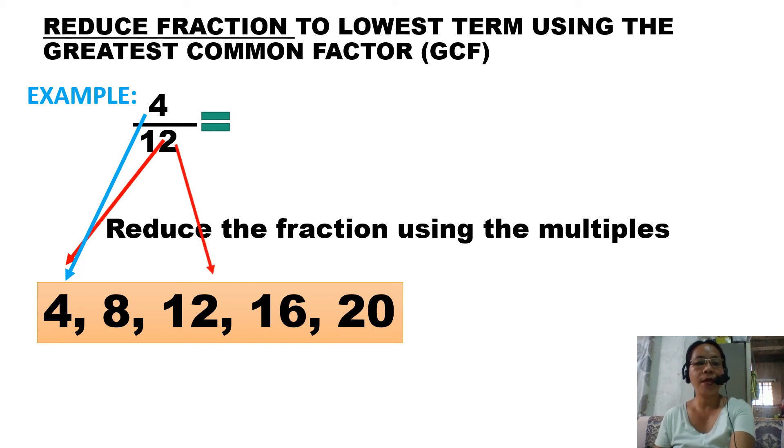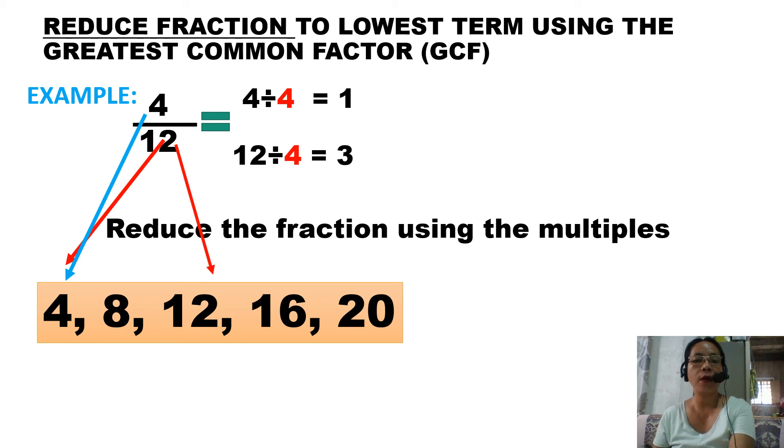So what happens? We use 4 because when we say greatest common factor or greatest common multiples, it's the smallest between the two that becomes your divisor to reduce the fraction. Just like earlier, divide it: 4 ÷ 4 = 1, 12 ÷ 4 = 3. So the answer is the same. 4/12 = 1/3. The lowest term of 4/12 is 1/3.